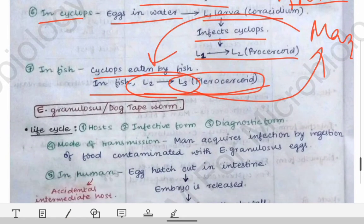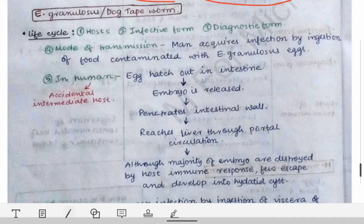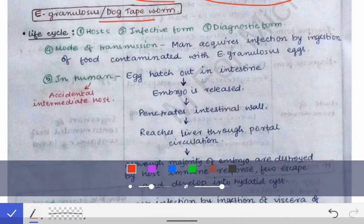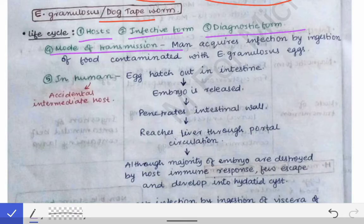Now coming to the next cestode — Echinococcus granulosus, or the dog tapeworm. It is called the dog tapeworm because the definitive host in the case of Echinococcus granulosus is a dog. Regarding the mode of transmission: man is never a natural host for Echinococcus granulosus — man acquires this infection accidentally.